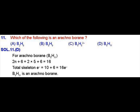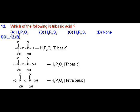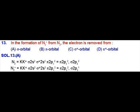Question number 12 asks which one is the tribasic acid. A tribasic acid should have 3 acidic hydrogen atoms. In the case of phosphorus acids, 3 OH groups should be present. The molecular formula given in option B can have 3 OH groups, so it should be a tribasic acid.